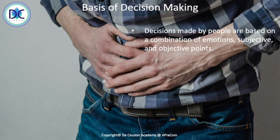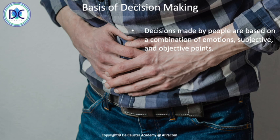Decisions are made by people based on a combination of emotions, subjective and objective points. We have different elements. Our decisions can be influenced depending on our emotional state. We may have subjective evaluation parameters that we are thinking about, and there are some objective points. We have to look at all the combinations that we can see.